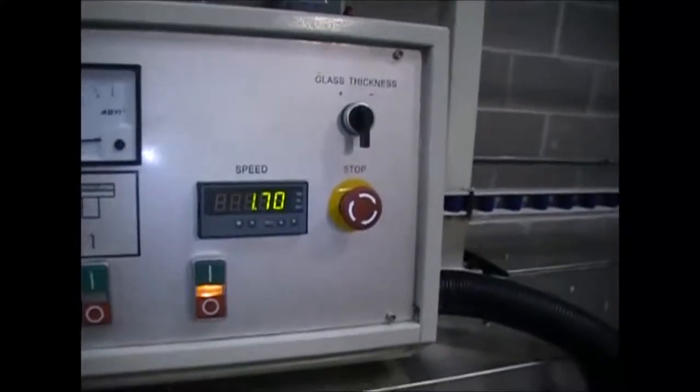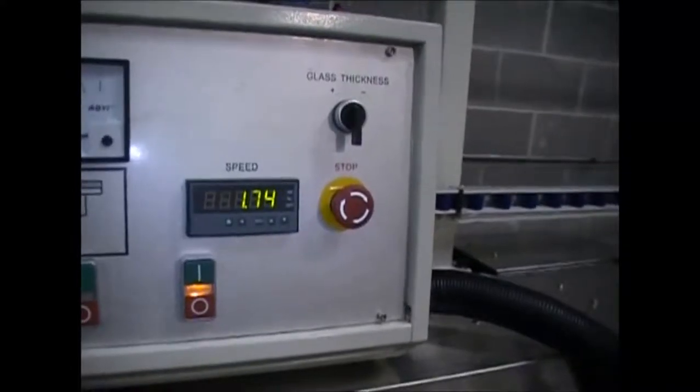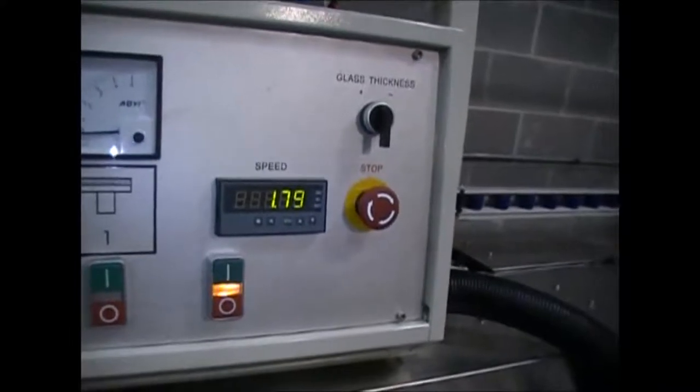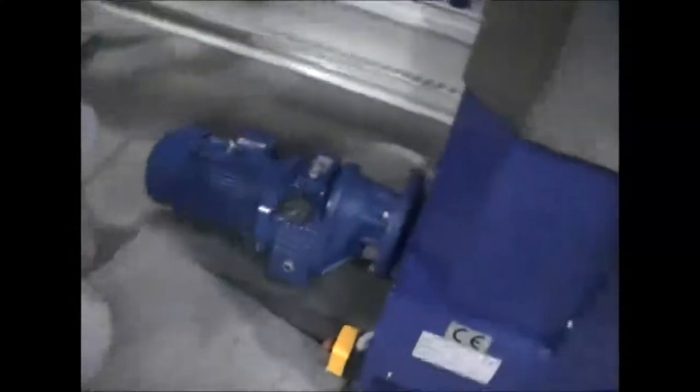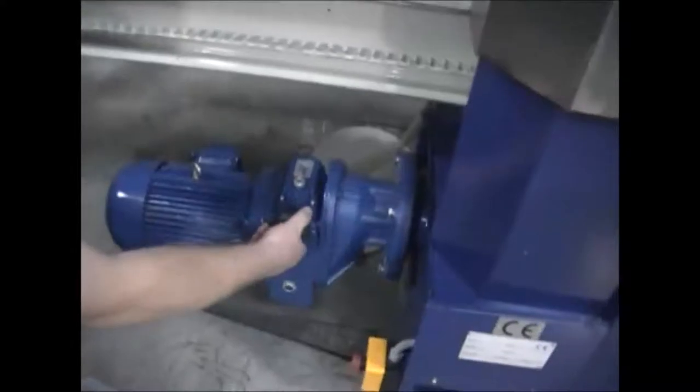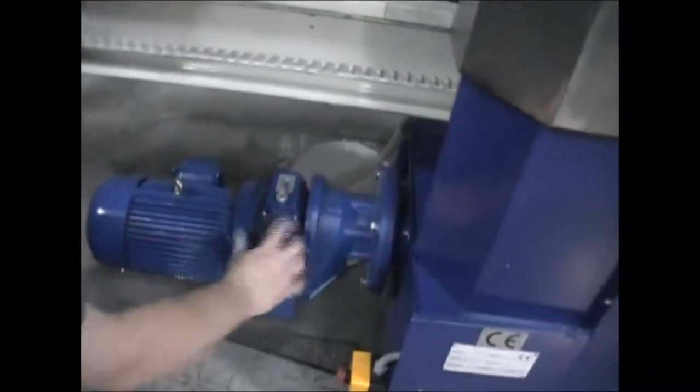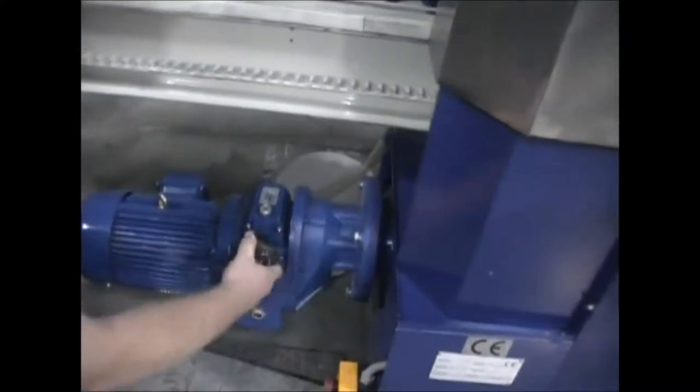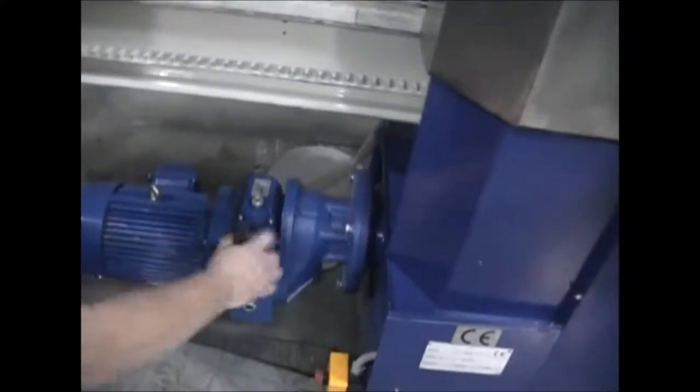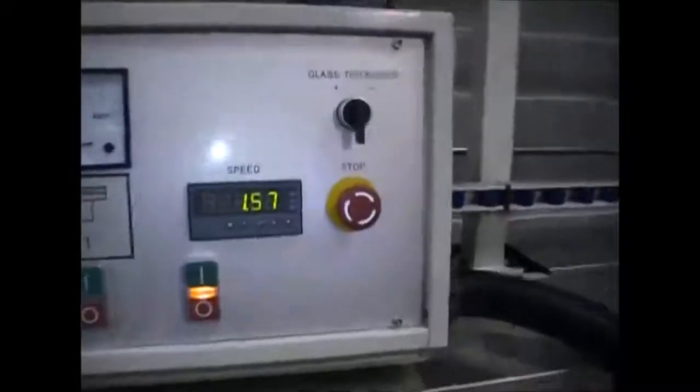To turn it down, we're going to go to this hand wheel on the drive motor and turn it counterclockwise to slow it down. Clockwise makes it faster. Give it a couple turns. Keep going Rob, a few more. That's pretty good right there. That's a simple adjustment which will get it down closer to 1.5.